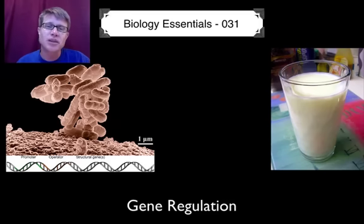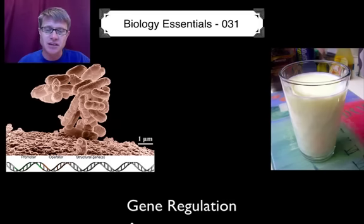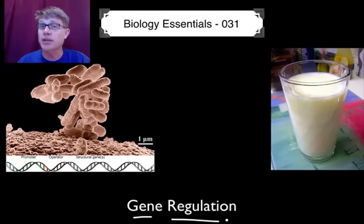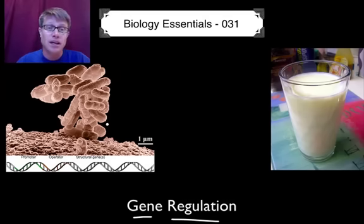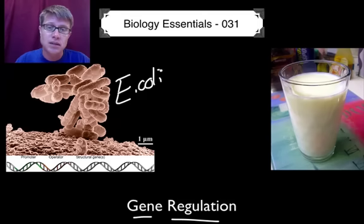Hi. It's Mr. Andersen and welcome to Biology Essentials video 31. This is on gene regulation — in other words how we express a gene or not, how we make a protein or not. And I wanted to start with an organism that lives in our intestine called E. coli.